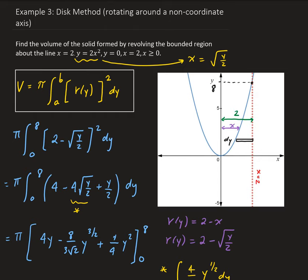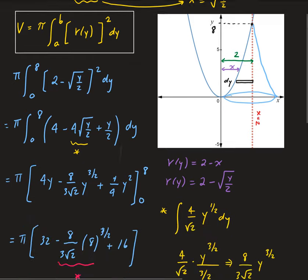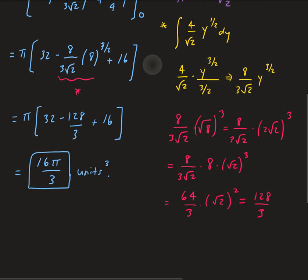If we take that region and revolve it around x equals 2, it would look something like an upside-down horn. And the volume of that solid works out to be 16π over 3.